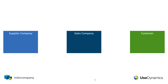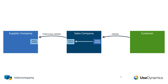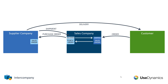So when handling an order from a customer, you'll need to create a sales order for your customer. When you've done that, you'll be creating a purchase order for your supplier company, where they need to create a sales order for your sales company. When your supplier delivers the items to your customer,